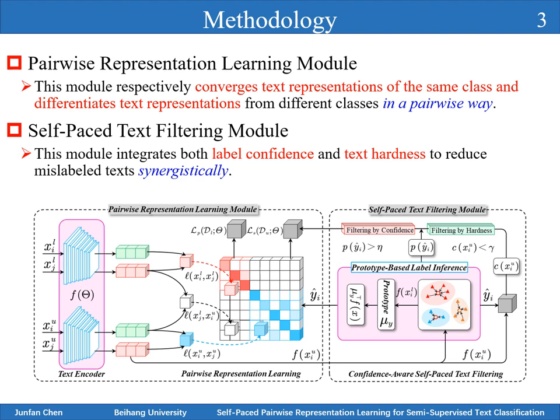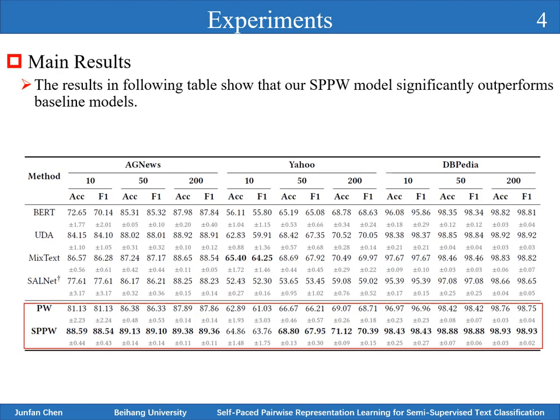A self-paced text filter model is presented to integrate both label confidence and task hardness to reduce mislabeled texts. We evaluate the proposed model on three benchmark datasets and show that our method significantly outperforms baseline models.